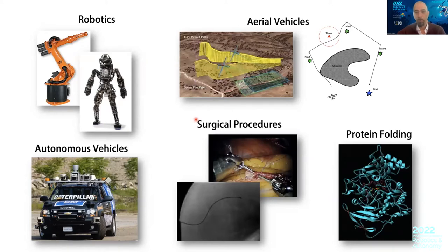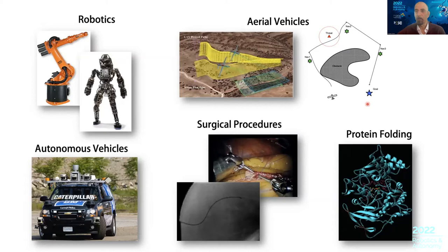It's a path planning problem where you want to move the needle or catheter and try not to hit any obstacles — in this case, the tissue. Another one that may not be as obvious is, for example, protein folding, where you want to figure out how the protein folds from one orientation to another orientation, one configuration to another configuration.